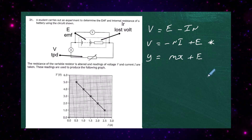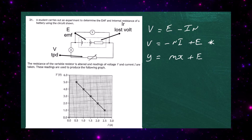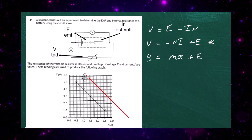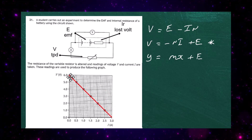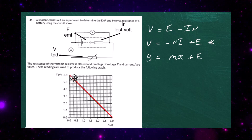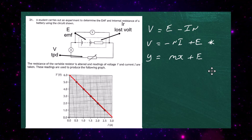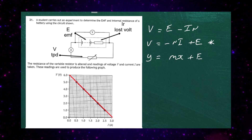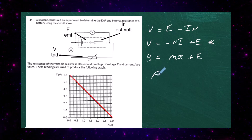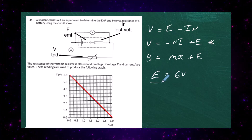First of all we find the EMF by extending the graph backwards — represented by the red line here. You can see the graph cuts the y-axis at a value of six, which means the EMF equals six volts. That's the first part done.